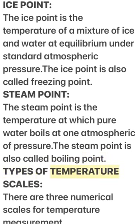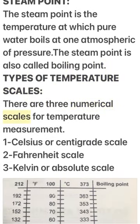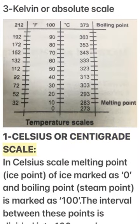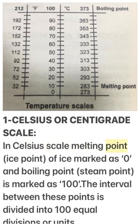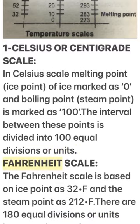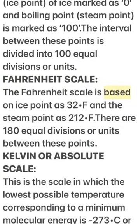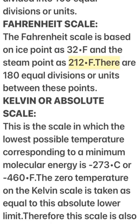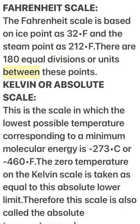Types of temperature scales: There are three numerical scales for temperature measurement. 1) Celsius or centigrade scale: The melting point of ice is marked as 0°C and the boiling point is marked as 100°C; the interval between these points is divided into 100 equal divisions. 2) Fahrenheit scale: The ice point is 32°F and the steam point is 212°F; there are 180 equal divisions between these points.